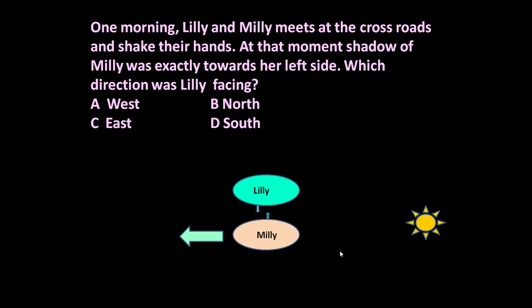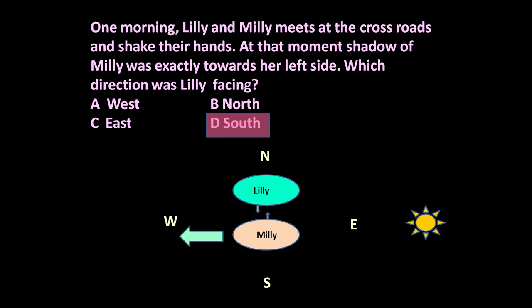In morning hour the sun is towards the east, so this side is east and this side is west. Here it is north and here it is south. Therefore, Lily was facing towards south.